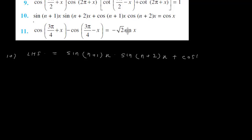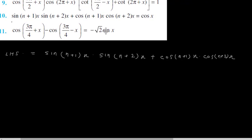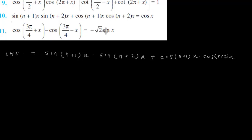Tenth problem. LHS is sin(n plus 1)x into sin(n plus 2)x plus cos(n plus 1)x into cos(n plus 2)x. We have to prove this equals cos x. Now this is sin A sin B plus cos A cos B, which is cos A cos B plus sin A sin B, and cos A cos B plus sin A sin B equals cos(A minus B).